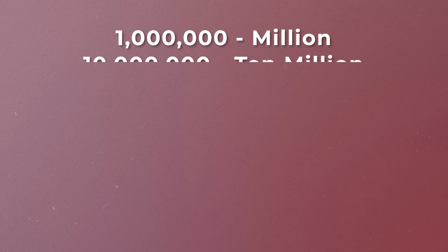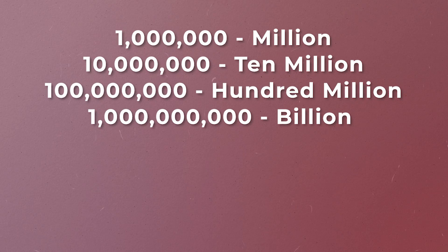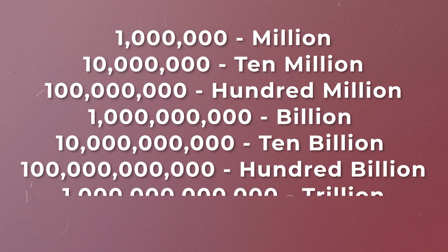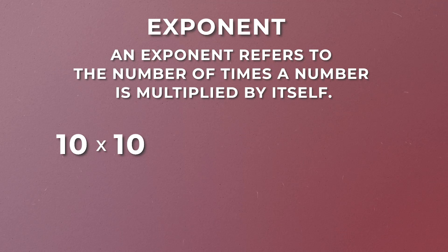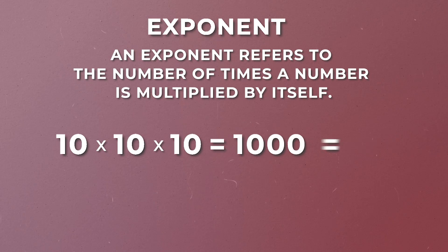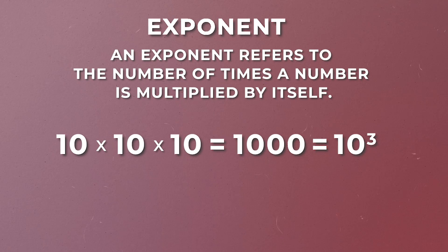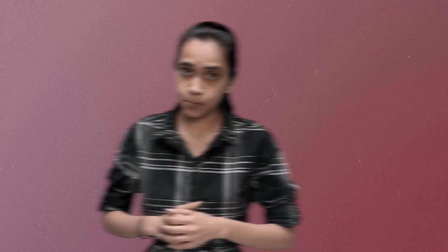Until now we were able to write the numbers exactly, but as we increase further it is going to be impossible to write all the zeros. So that's why we need a new notation — the exponent. Exponents are shorthand for multiplying the same number by itself. For example, 10 multiplied by 10 multiplied by 10 equals 1,000, so you write it as 10 raised to the power 3. The importance of exponents will become clear as things start to get crazy.